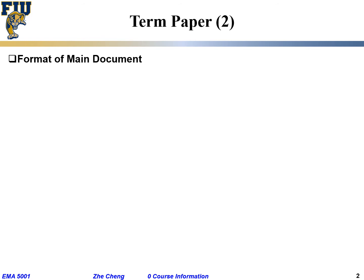Now we're going to talk about the format for the term paper. I want you to follow the format for one of the two papers you criticized. Pick one of them and follow the format exactly as it is published in the journal — whether it's one column or two columns, the font, the title, headings, subheadings, the format for figures, and the format for references. Try to follow the format exactly, and tell me which paper's format you followed.